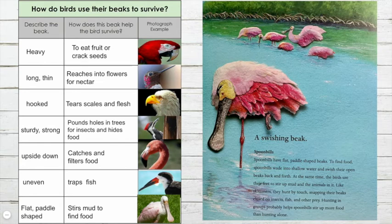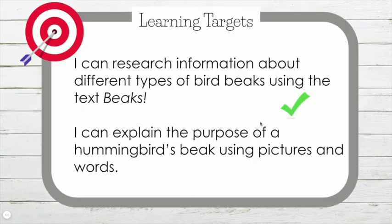Now our chart is full. Look how many beaks we've recorded — seven different types of beaks that all look different and have different jobs to help those birds survive. I'd say we've done some pretty good research about different types of bird beaks using that text Beaks. I think we can check that target off. Our next target says: I can explain the purpose of a hummingbird's beak using pictures and words.